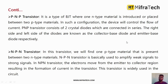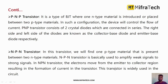In an NPN transistor, a P-type material is present between two N-type materials. NPN transistors are basically used to amplify weak signals into strong signals for amplification purposes. In an NPN transistor, electrons move from the emitter to the collector region, resulting in the formation of current.